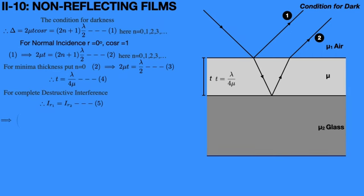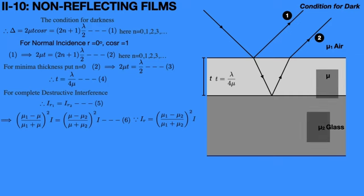According to Fresnel's equation, we can write: (mu1 minus mu) divided by (mu1 plus mu), whole squared, into I, equals (mu minus mu2) divided by (mu plus mu2), whole squared, into I. Here in the IR1 equation, the refractive indices are mu1 and mu; in the IR2 equation, the refractive indices are mu and mu2. Now cancel the I term on both sides and cancel the square on both sides. Then we can write: (mu1 minus mu) divided by (mu1 plus mu) equals (mu minus mu2) divided by (mu plus mu2).